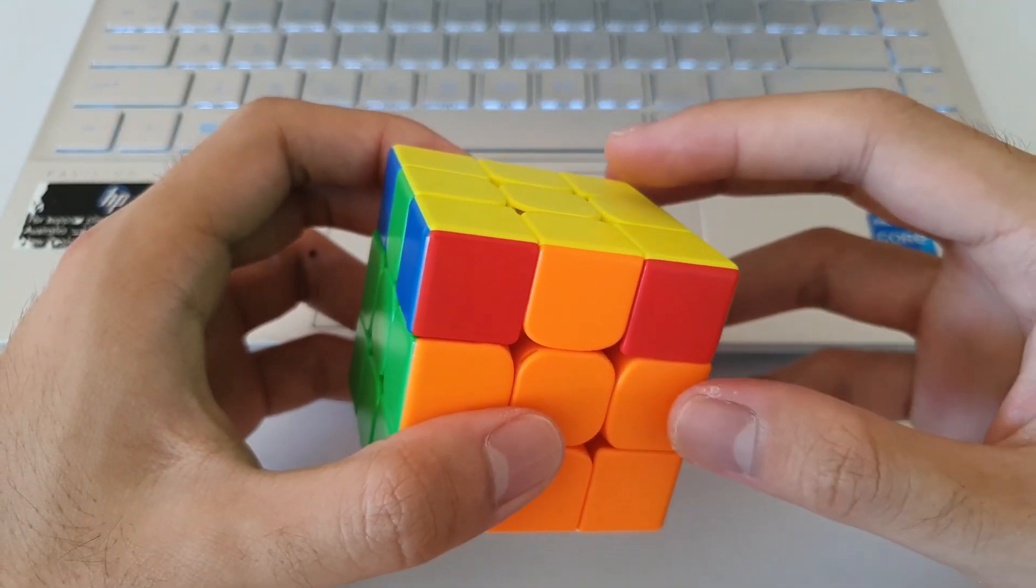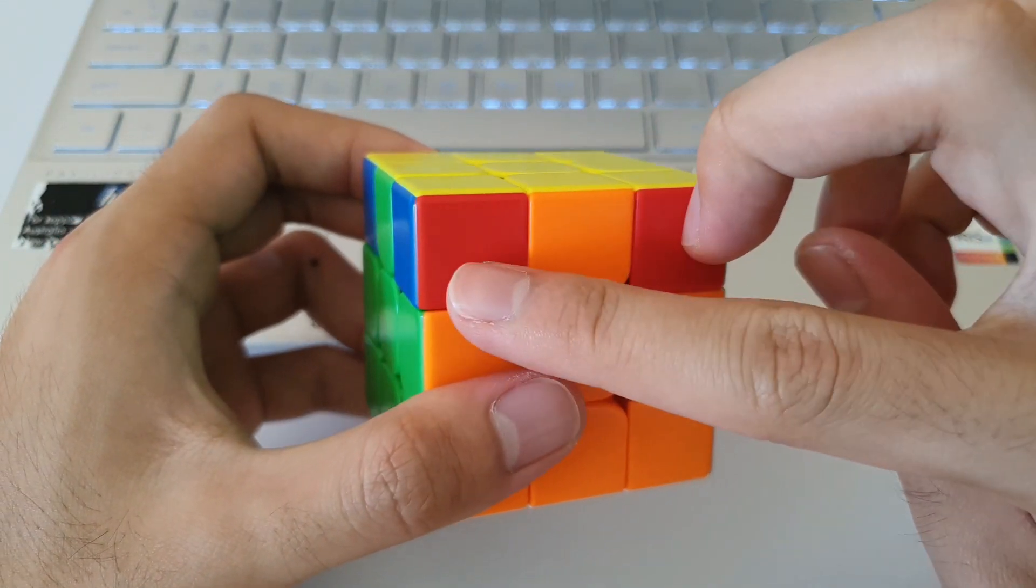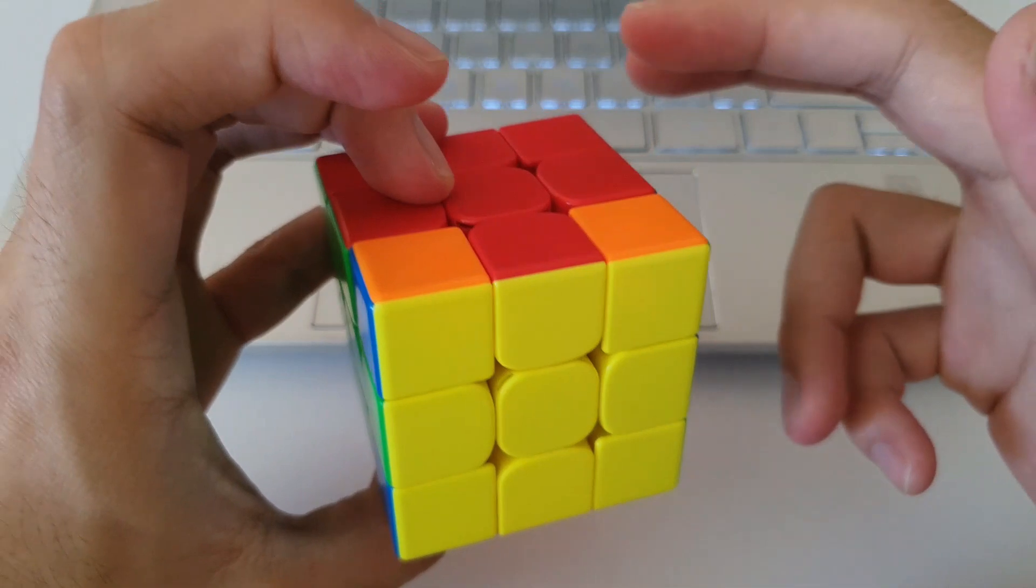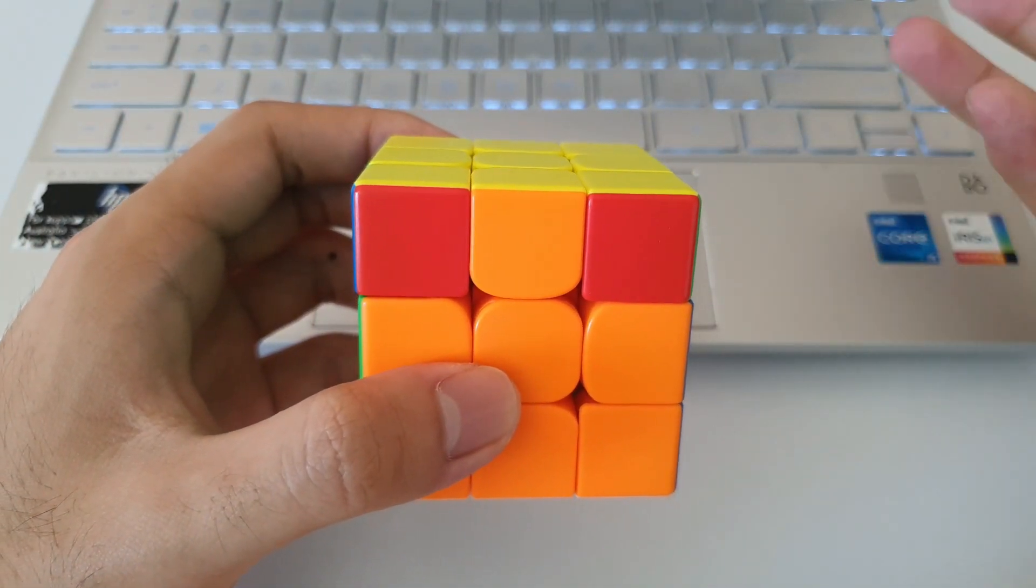But here's an example where I would need to do an AUF. So I have red headlights at the front, but red belongs at the back as shown. So at the end of the algorithm, I'll have to do a U2.